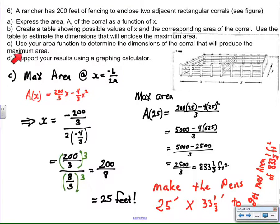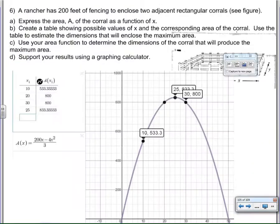Lastly, it did say support your work using graphing calculator. I used Desmos for the software because it's easier to get to and to display for you all. But sure enough, 25 and 833 and 1 third is the maximum area. Here's 30, 800, which is what I found by hand, and I also had a table over here to show that 20, 800, and 10, 500, and 33 and 1 third are consistent with what I did when I specialized.